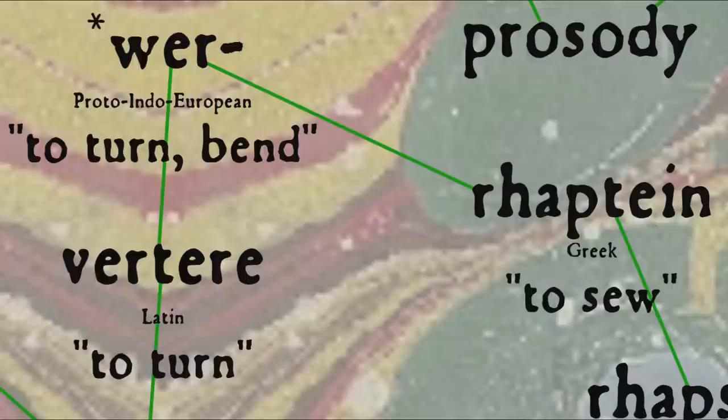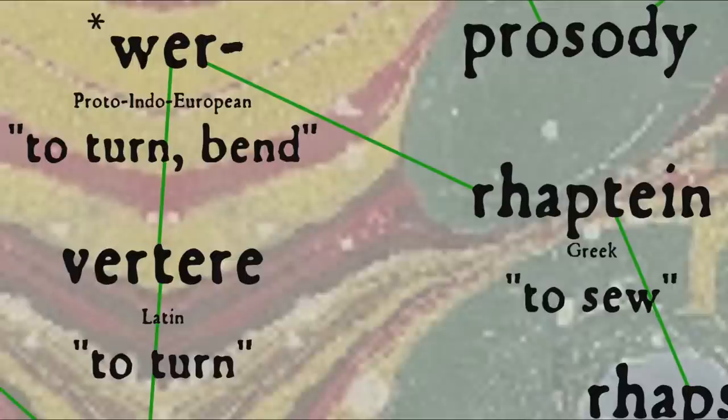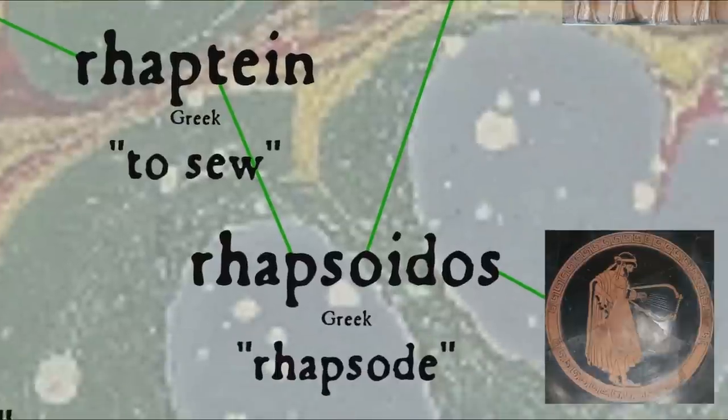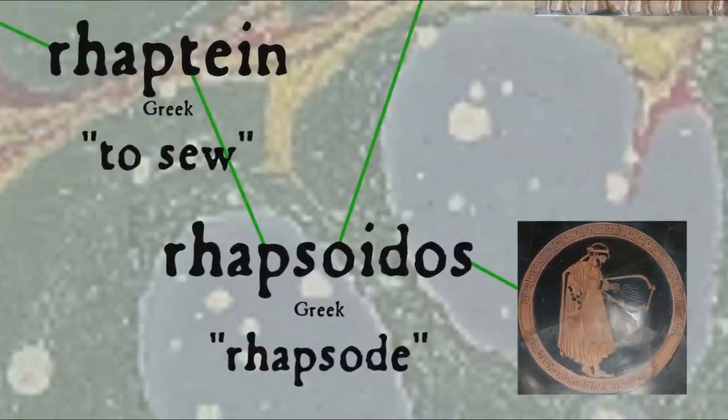Interestingly, Latin vertere can be traced back to the Proto-Indo-European root wer to turn or bend, which is also the source of Greek rhaptein, which gives us rhapsode, a Greek word for reciters of poetry. Sometimes, by the way, the word verse is used to refer not just to a line of poetry, or as a synonym of poetry in general,